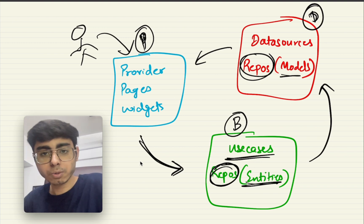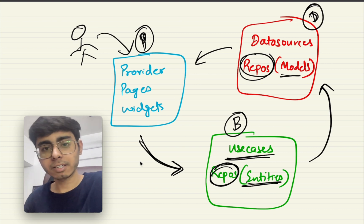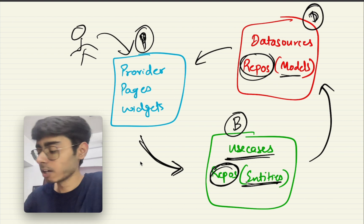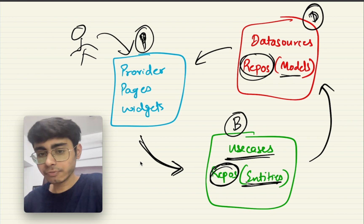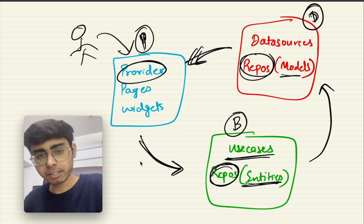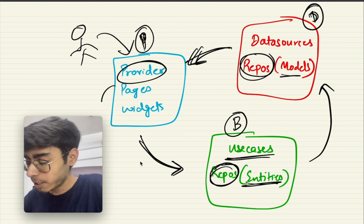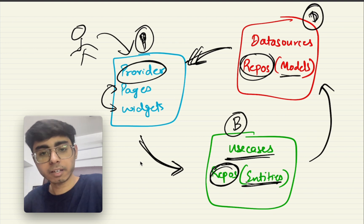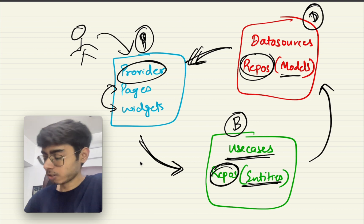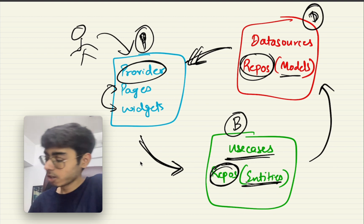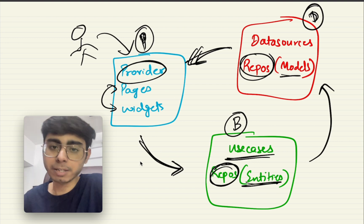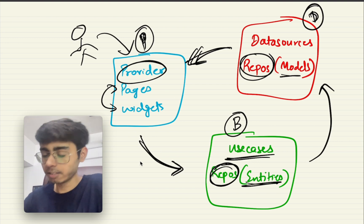That response data can be stored in the data sources. Data sources can be your local database or your remote database — MongoDB, Firebase, anything. Once the data is fetched, these data sources hit your providers or your business logic layer, the BLoC layer. These providers then update your pages and widgets. Like this, the cycle is completed: from widgets, to repositories and entities via use cases, to repositories and models in the data layer, to data sources, back to the business logic layer of your presentation layer. The cycle can repeat.